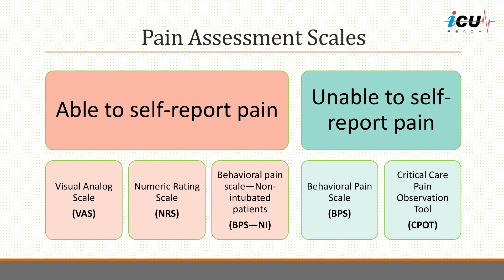Various scales are available for pain assessment. In patients where self-reporting of pain is possible, a visual analog scale or numeric rating scale and a behavioral pain scale for non-intubated patients can be used. For patients who are unable to self-report, a behavioral pain scale and a critical care pain observation tool or CPOT should be used. Of note, vital signs should not be used as surrogates for pain assessment.